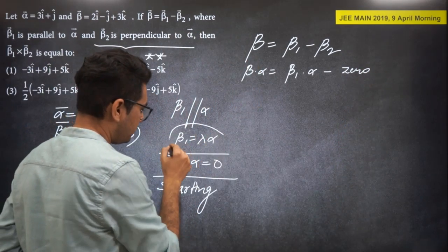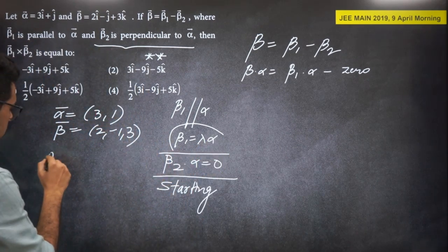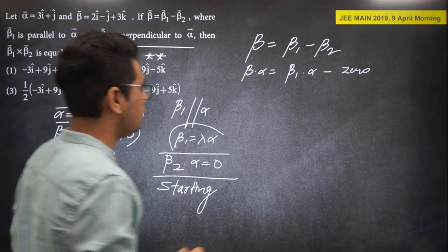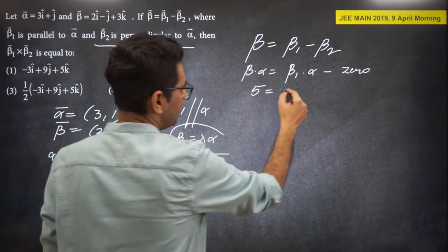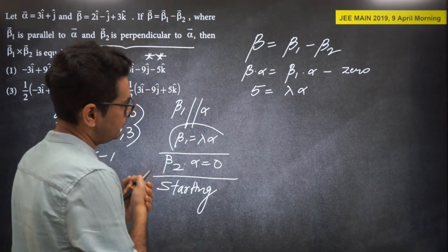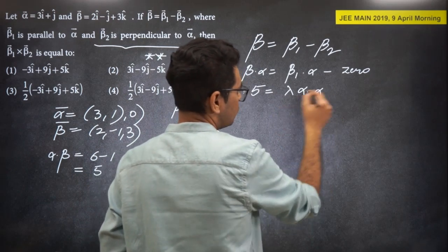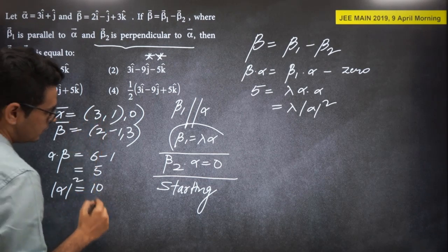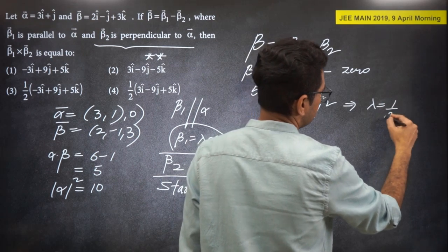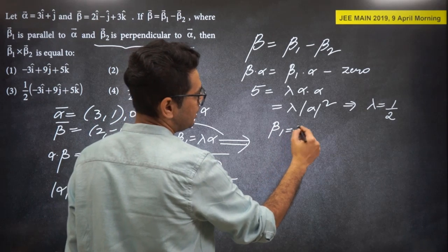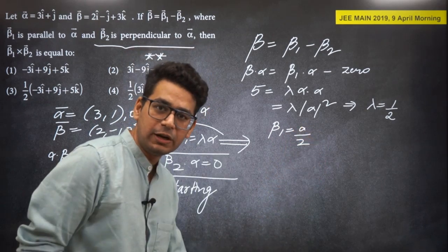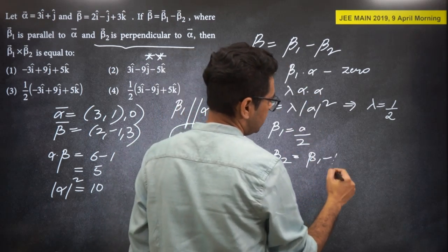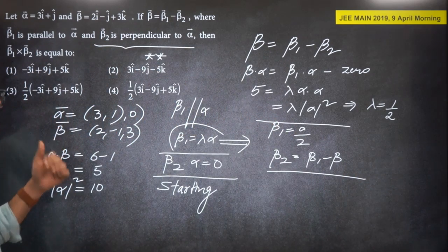From beta = beta1 + beta2 (note: beta = beta1 - beta2 means beta2 = beta1 - beta), take dot product with alpha: beta·alpha = beta1·alpha + beta2·alpha. Since beta2·alpha = 0, beta·alpha = lambda*|alpha|². alpha·beta = 6 - 1 = 5 (third component of alpha is 0). |alpha|² = 9 + 1 = 10. So lambda = 5/10 = 1/2. Therefore beta1 = alpha/2.